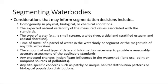Some further recommendations we've provided to states in considering how they want to segment their waters include: homogeneity in physical, biological, or chemical conditions of a water body; the expected natural variability of measured values associated with the water quality standards — for example, how water quality indicators such as pH or temperature may naturally vary throughout the water body. Another consideration is the type of water: it's very common for states to subdivide lakes or coastal waters into shoreline versus open water assessment units. States should also consider the time travel of a parcel of water in the water body or the magnitude of any tidal excursion — that is, how quickly water is moving through the water body, since a quicker moving water body may warrant different segmentation than a slower moving one where pollution might have a higher residence time.